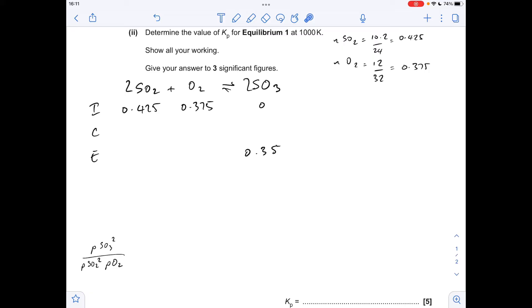I always do these questions using an ICE table, so initial moles, change of moles, equilibrium moles. There's our initial moles, and we were told at equilibrium we've got 0.35 moles of SO3. That increase in moles of SO3 has been brought about by a decrease in the moles of SO2 and O2. If we think about the ratio, 2 to 2, obviously 1 to 1. So the SO2 is going to drop by the same amount of moles of SO3 that's produced, meaning there'll be 0.075 moles of SO2 left at equilibrium.